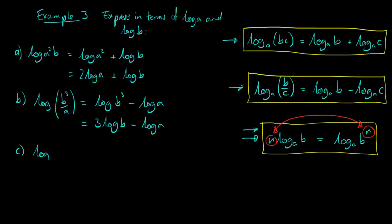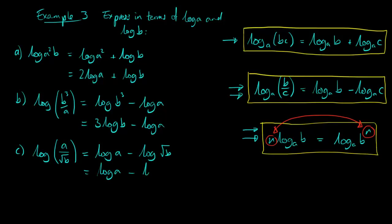A harder one: log of a divided by the square root of b. We have a division, so we use the division-subtraction rule to write log of a minus log of root b. To express this in terms of log b, we rewrite root b as b to the power of a half, then use the power rule to bring the half to the front, giving log a minus a half log b.